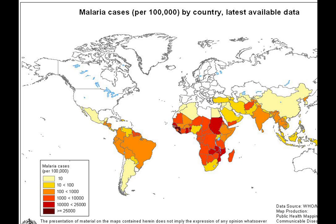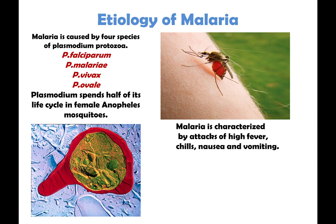You can see India is also on the map. The etiology of malaria is due to four plasmodial species: falciparum, malariae, vivax, and ovale, and falciparum is the most deadly of these. Malaria is characterized by attacks of high fever, chills, nausea, and vomiting as discussed.